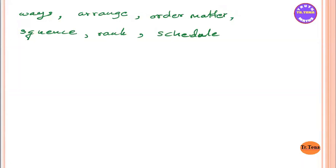If you have a permutation, you can find a way to arrange, or by meta, sequence, rank, structure, and permutation. It is a permutation. We can see the example clearly.